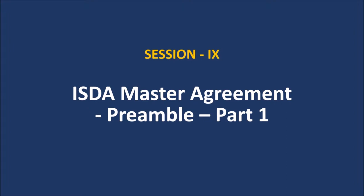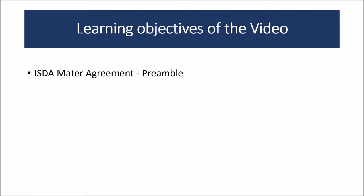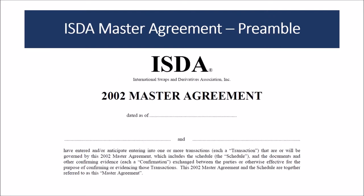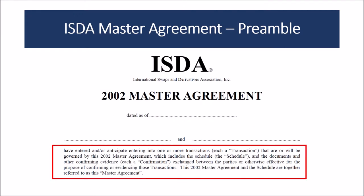The topic of this video is the preamble of the ISDA Master Agreement. In the previous video we learned about the outline of the ISDA Master Agreement. In this video we are learning about the preamble section of the ISDA Master Agreement. I will also discuss a couple of things about the first page: the document drafted date, the party names, and then move to the preamble part of the draft.